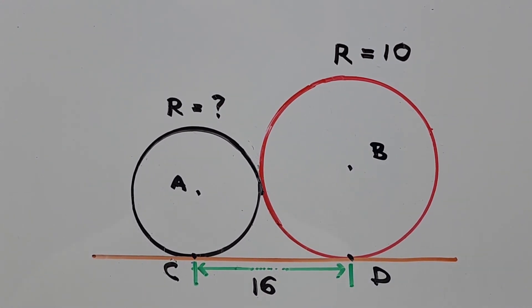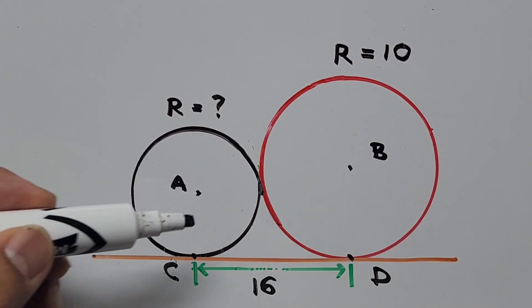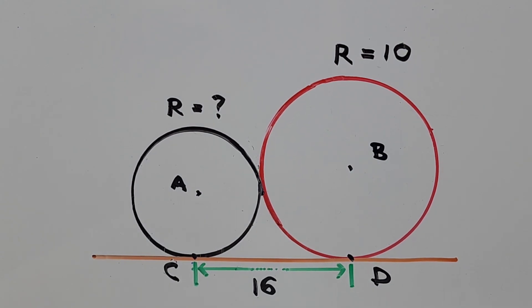Next we're going to project a line from the center of this smaller circle to the point of tangency at point C. The same way from the bigger circle at point B to point D.